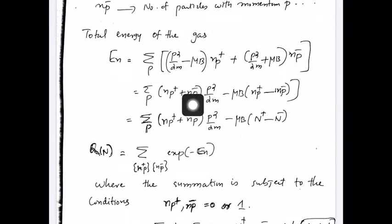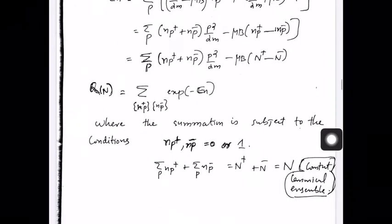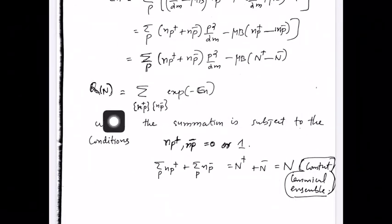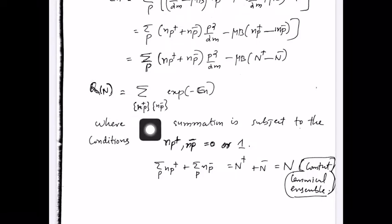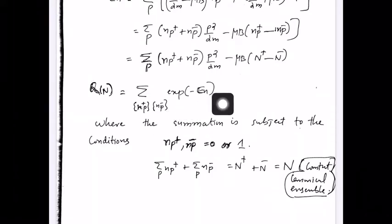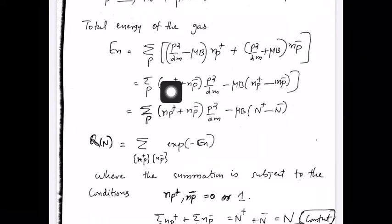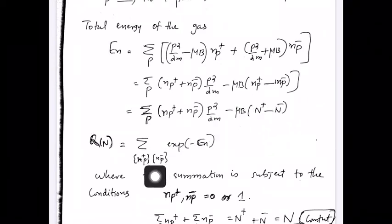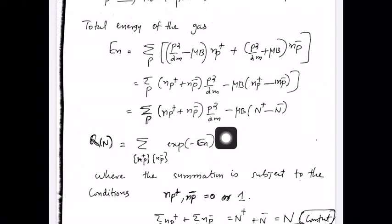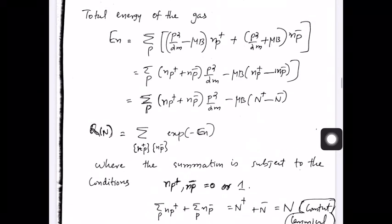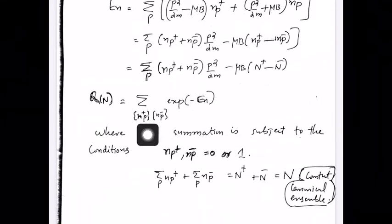Once we have determined the total energy, we go for the partition function. We are using the canonical partition function. The partition function Q_N equals a sum over all sets of {n_p+} and {n_p-} values of exp(−βE). The energy of the gas depends on the set of values of n_p+ and n_p−, and depending on these, we will have different energies. So these are the distribution sets.